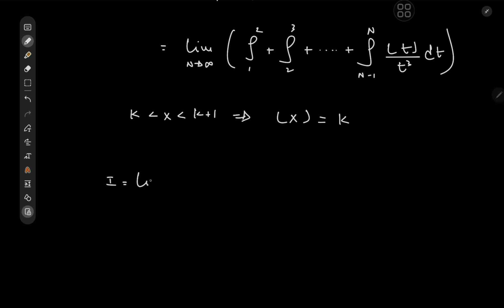So i here equals the limit as n goes to infinity of, let's see, for the integral from 1 to 2 we have 1. So we have 1 times the integral from 1 to 2 of 1 over t cubed dt.